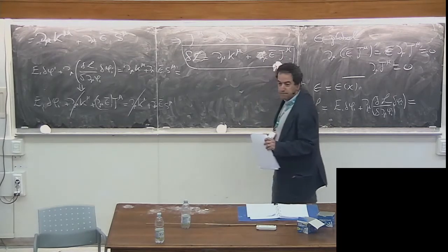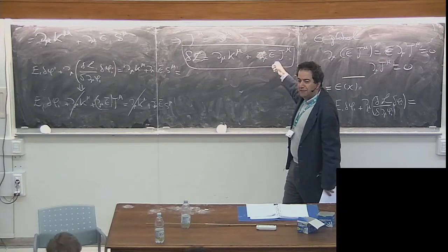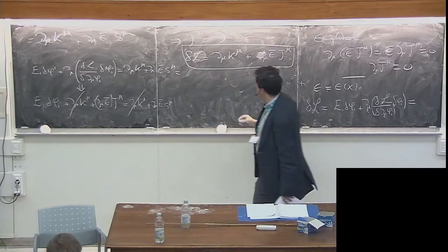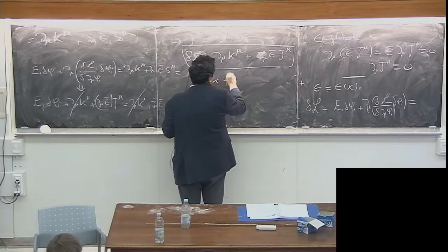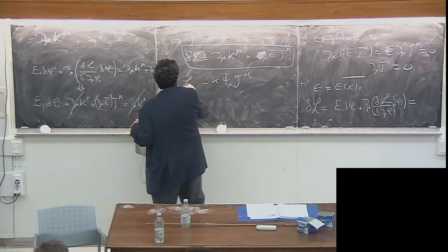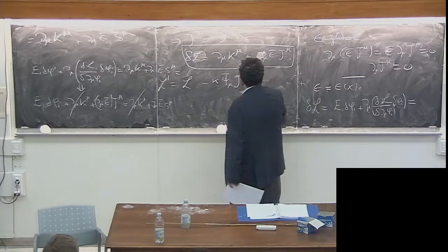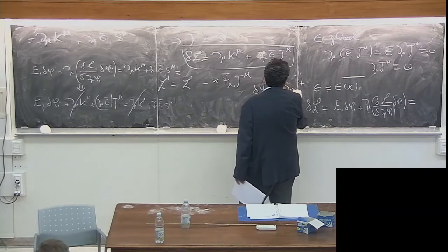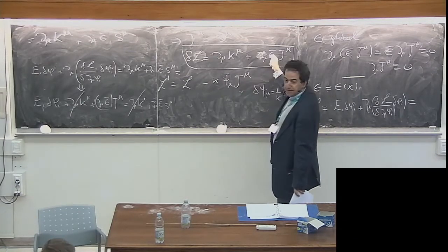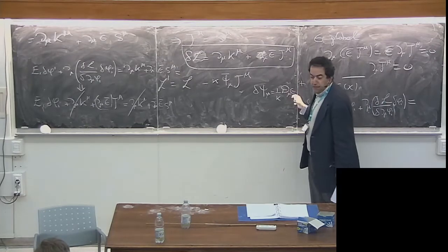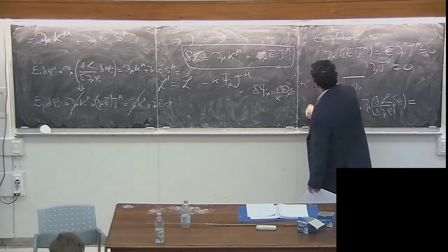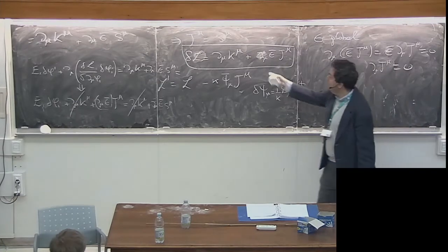How do we cancel this? We need to add a term whose variation cancels this — a term which contains the derivative of the supersymmetry parameter. This term is minus kappa psi bar_mu j_mu. If we add this to our Lagrangian and remember that delta psi_mu equals 1/k d_mu epsilon, then this contains precisely the derivative of epsilon which cancels the problematic term.